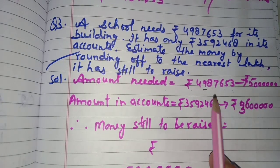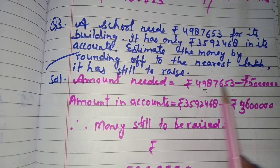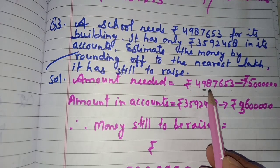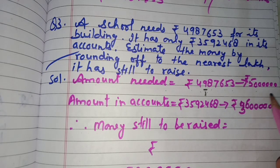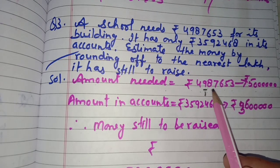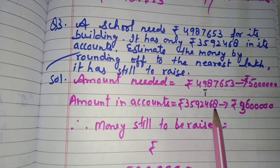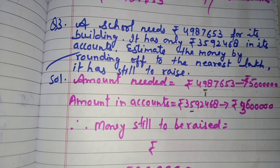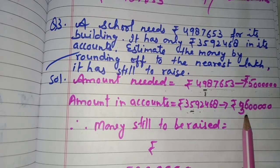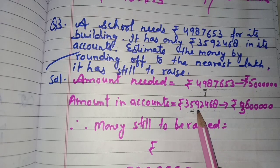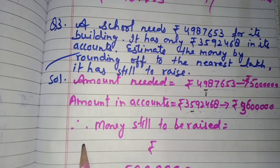Amount needed: 49,87,653. Rounding off the lakhs place — the digit to its right is 8, more than 5, so 9 becomes 10, carrying 1 over, making it 50 lakh, with all following digits as zeros. Amount in accounts: 35,92,468 — the digit to the right of the lakhs place is 9, more than 5, so 5 becomes 6, giving 36 lakh, with all following digits as zeros.